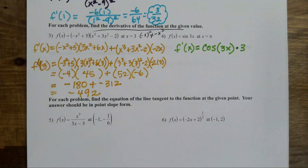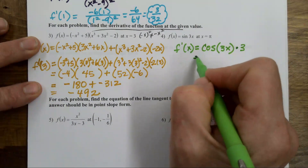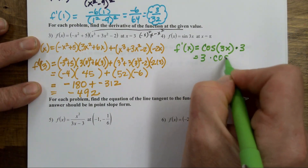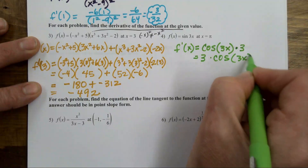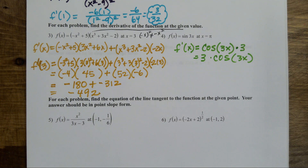Sometimes I do a little cleanup. I like to put the 3 in front so that I don't mess it up. I don't want to multiply the 3 times the 3x before I take the cosine. I know that whatever I get from the cosine of 3x gets multiplied by 3. And then I'm going to plug in pi.